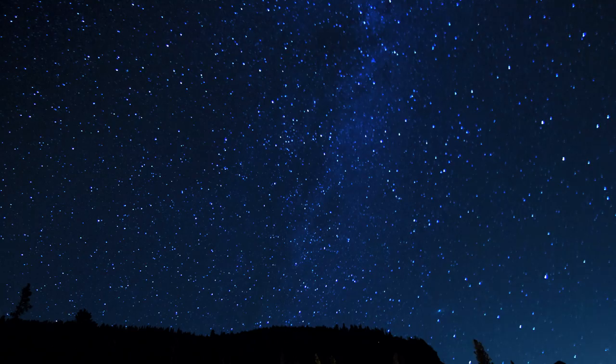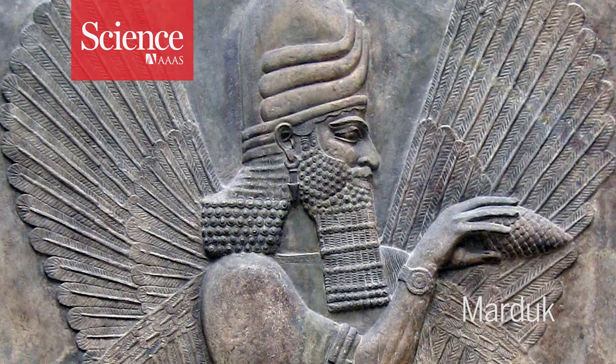Centuries ago, astronomers carefully tracked the motion of the moon and planets in the ancient city of Babylon. Jupiter was a particular favorite because it represented their main god, Marduk.